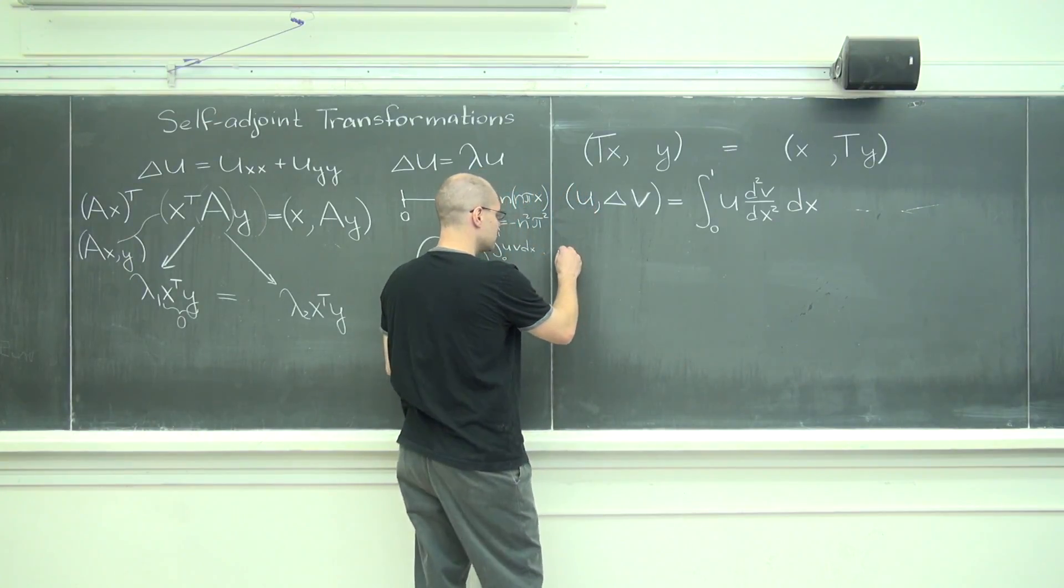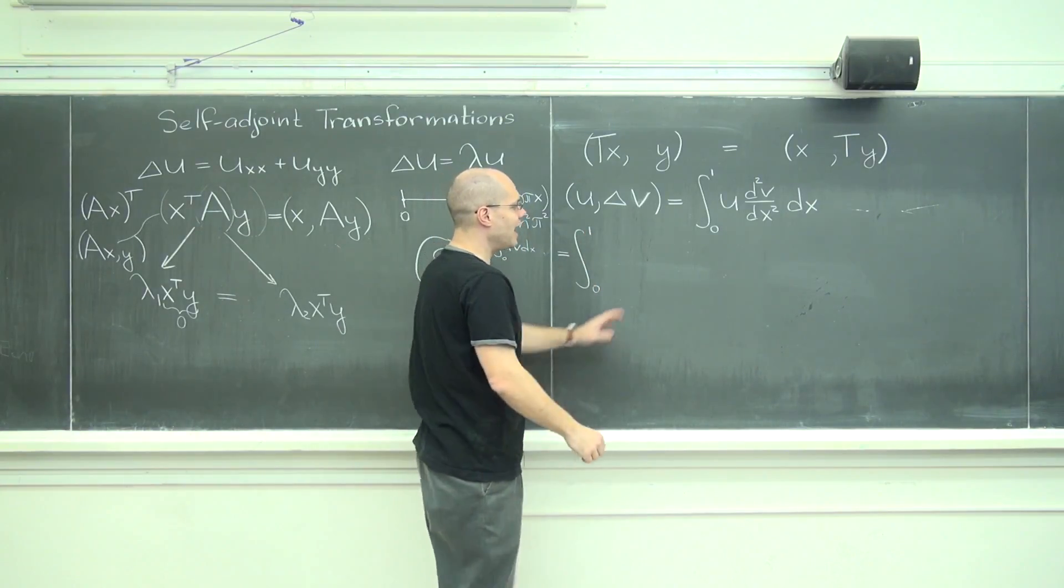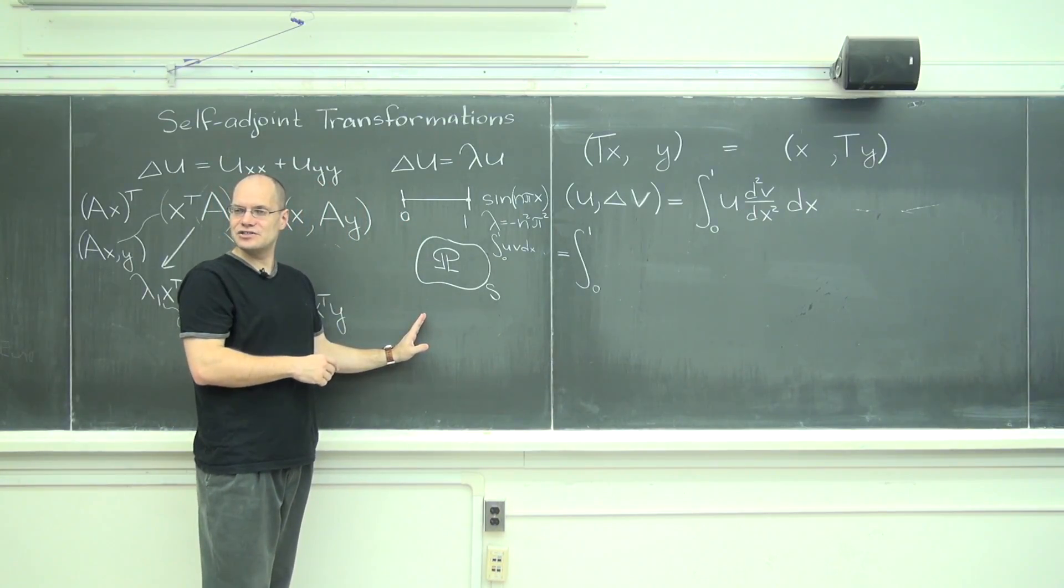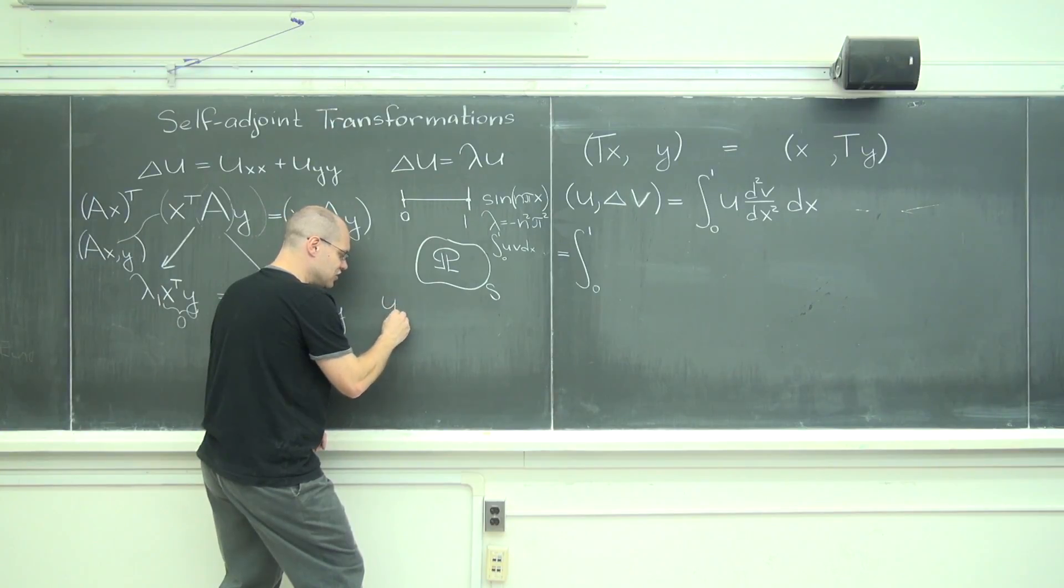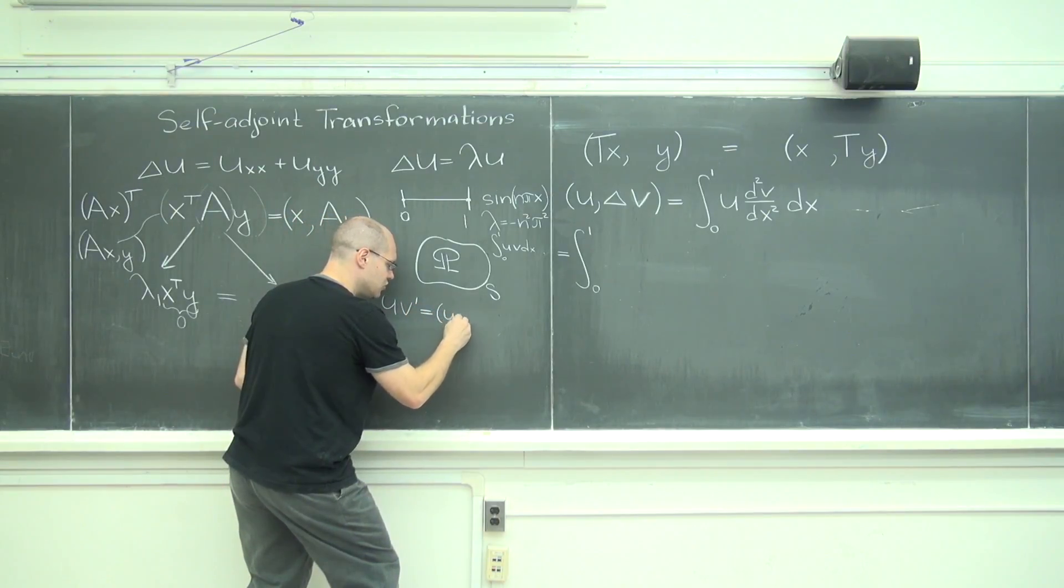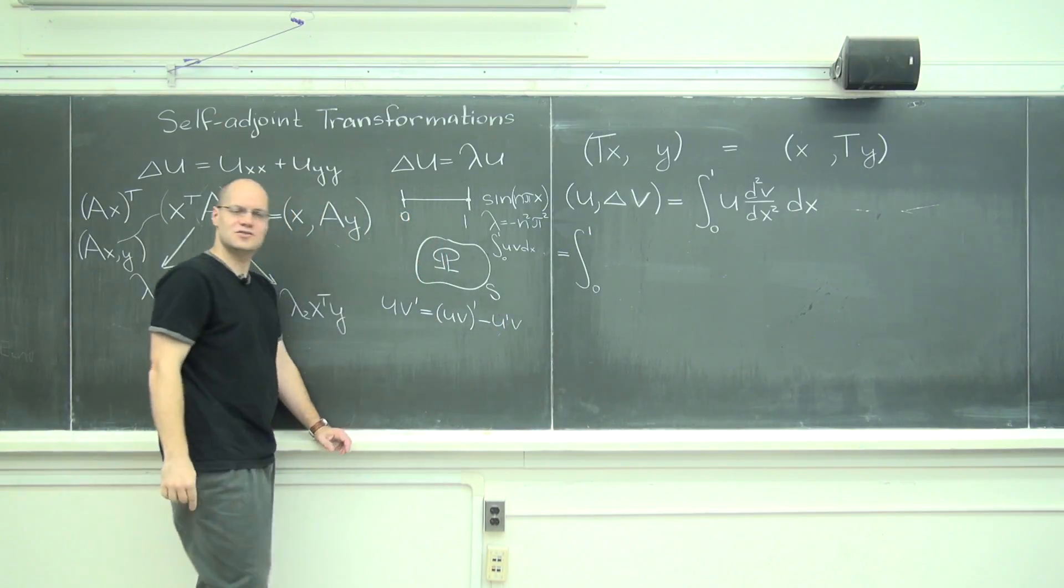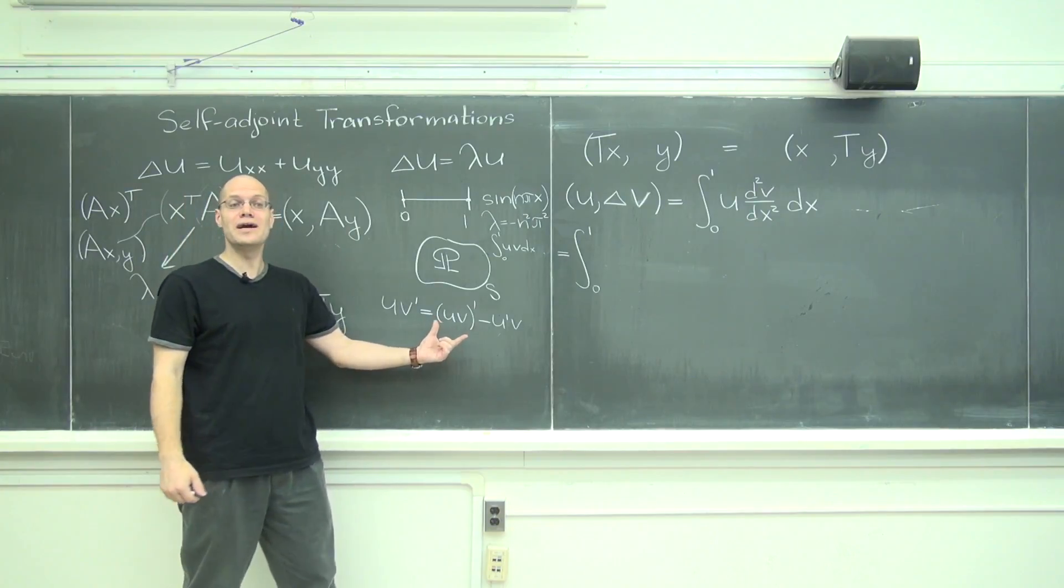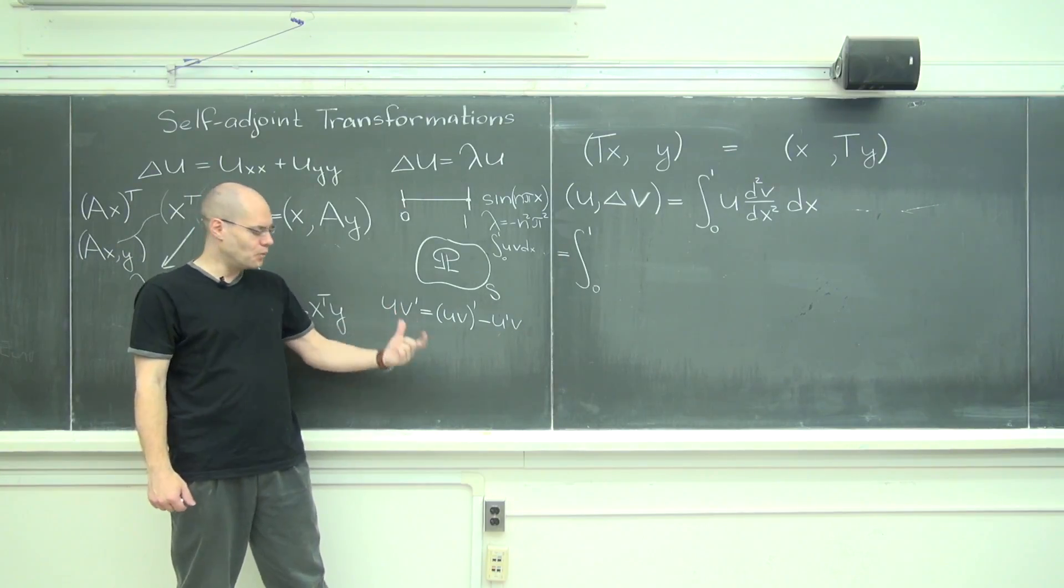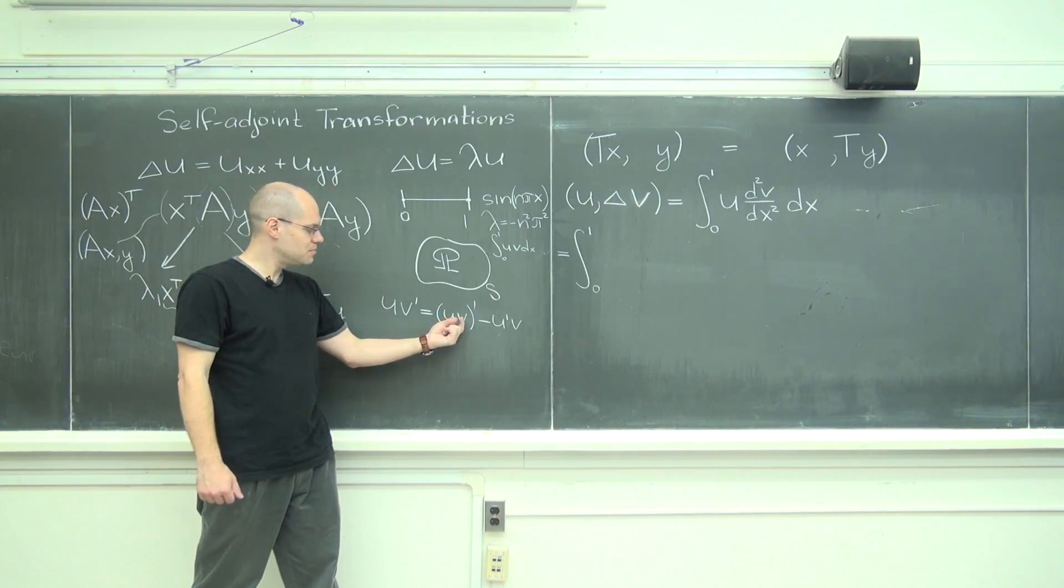First I will use the product rule in reverse inside. So the product rule in reverse. Let's go with the integral from zero to one. Here's what I'm doing: u times v double prime equals u times v prime minus u prime times v. Do you see why that is?